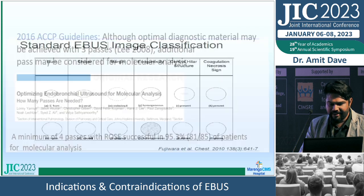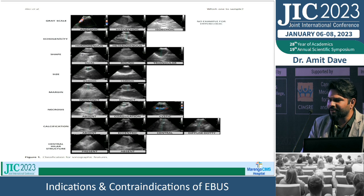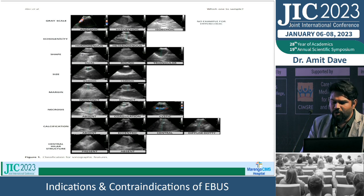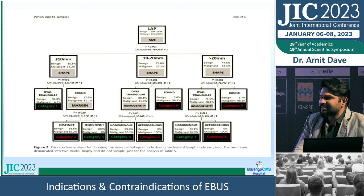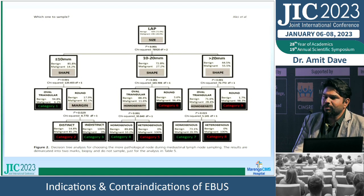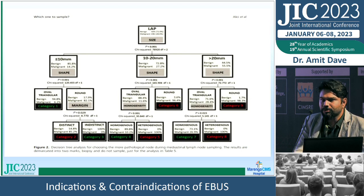Regarding EBUS image interpretation: these grayscale sonographic features — heterogeneity, anechoic, hypoechoic or isoechoic appearance, homogeneous or heterogeneous calcification, and node size — help determine which nodes to sample. Ideally every node could be sampled, but during staging you must prioritize because of needle cost and limited number of needles per case.